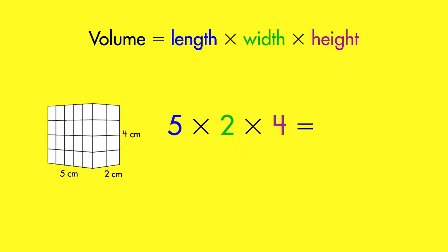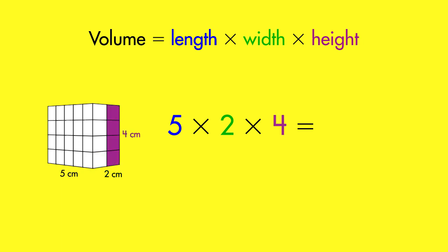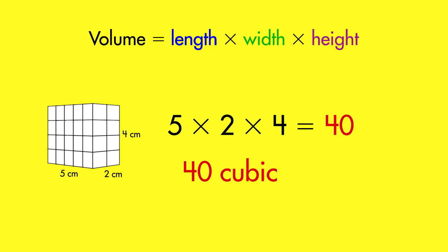By multiplying the length, width, and height together, we find the volume of the prism is 40 cubes, or 40 cubic centimeters.